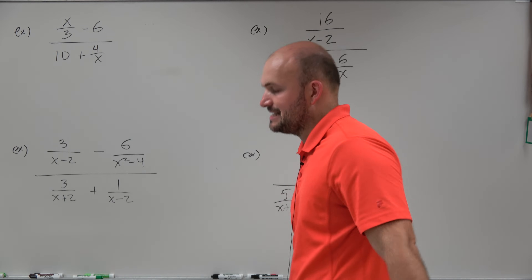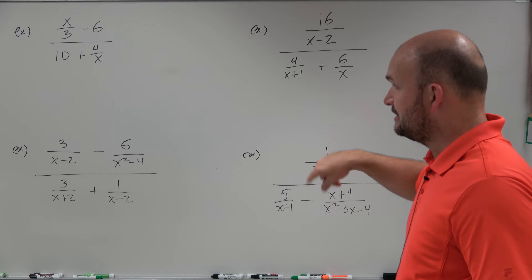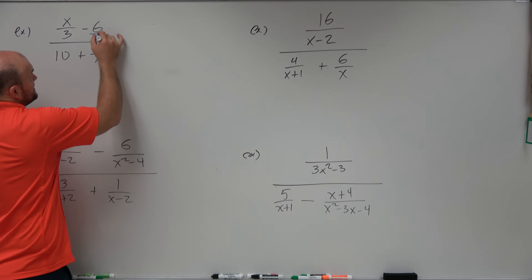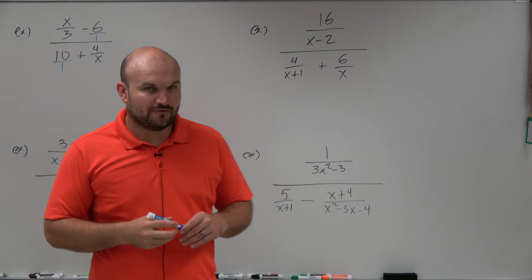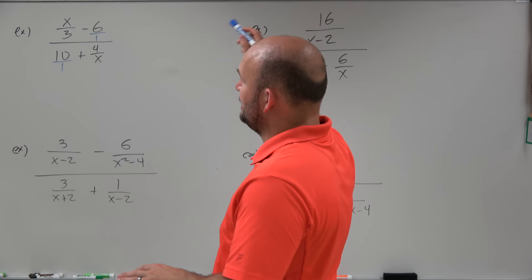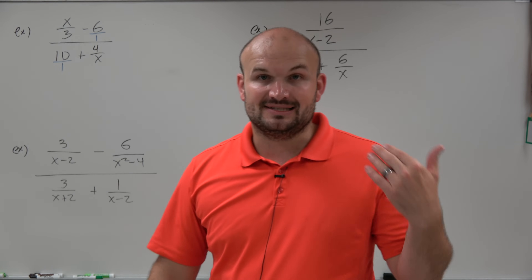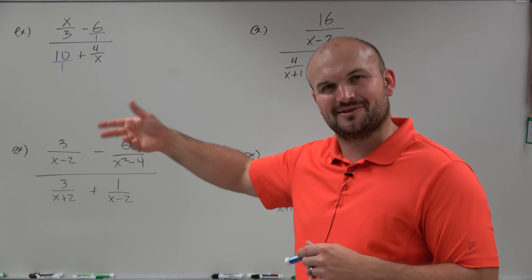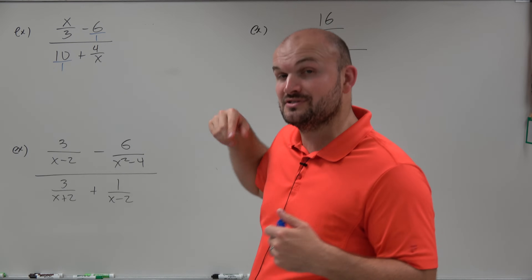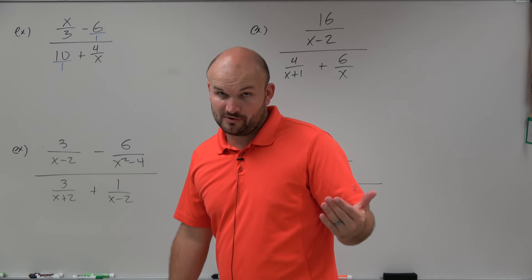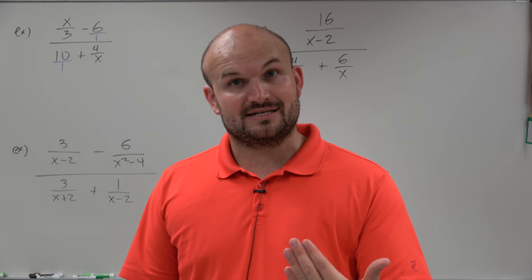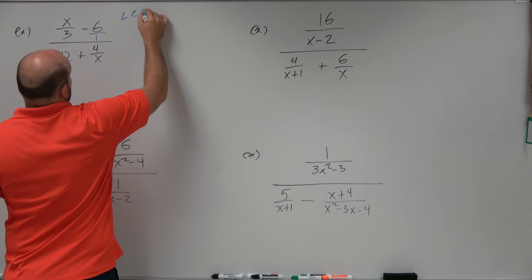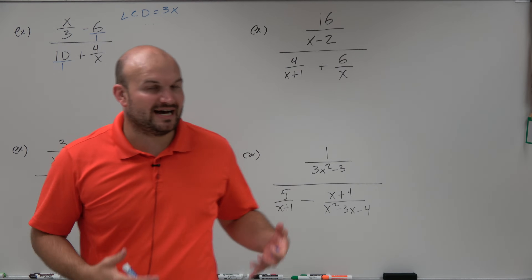So let's look at the first example. You can see I have a fraction x divided by 3, minus 6, in the numerator, and in the denominator I have 10 plus 4 over x. If we think about common denominators, we need to write 6 and 10 as fractions with denominators. Out of all my denominators — every fraction up there — I have a 3, two 1s, and an x. I need to find the smallest number that each of those denominators divides into. The smallest number 3 divides into is 3; for x it's x; and 1 divides into both 3 and x. So my LCD is equal to 3x.